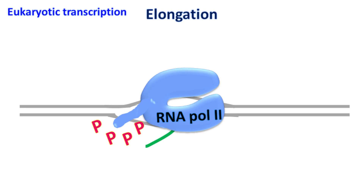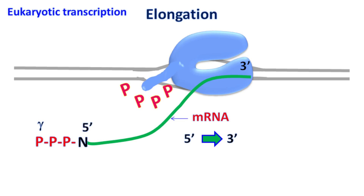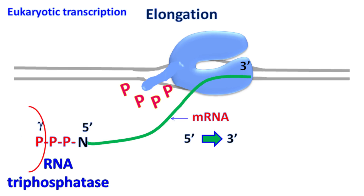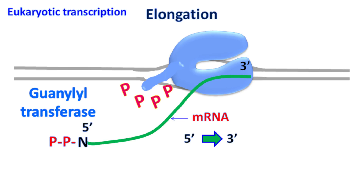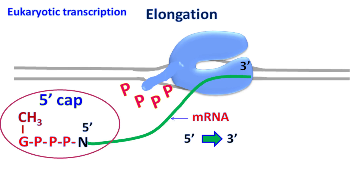5' Capping. As RNA polymerase starts elongation, the mRNA starts forming in the 5' to 3' direction. The first RNA processing event during elongation is 5' capping. The terminal gamma-phosphate of the nucleotide is removed by the enzyme RNA triphosphatase. Next, guanylyltransferase carries out a reaction between the beta-phosphate of the first nucleotide and the alpha-phosphate of GTP. Once guanine is attached, methyltransferase attaches a methyl group to the guanine nucleotide. This structure is called the 5' cap and helps in the recruitment of mRNA on the ribosome for initiation of translation.